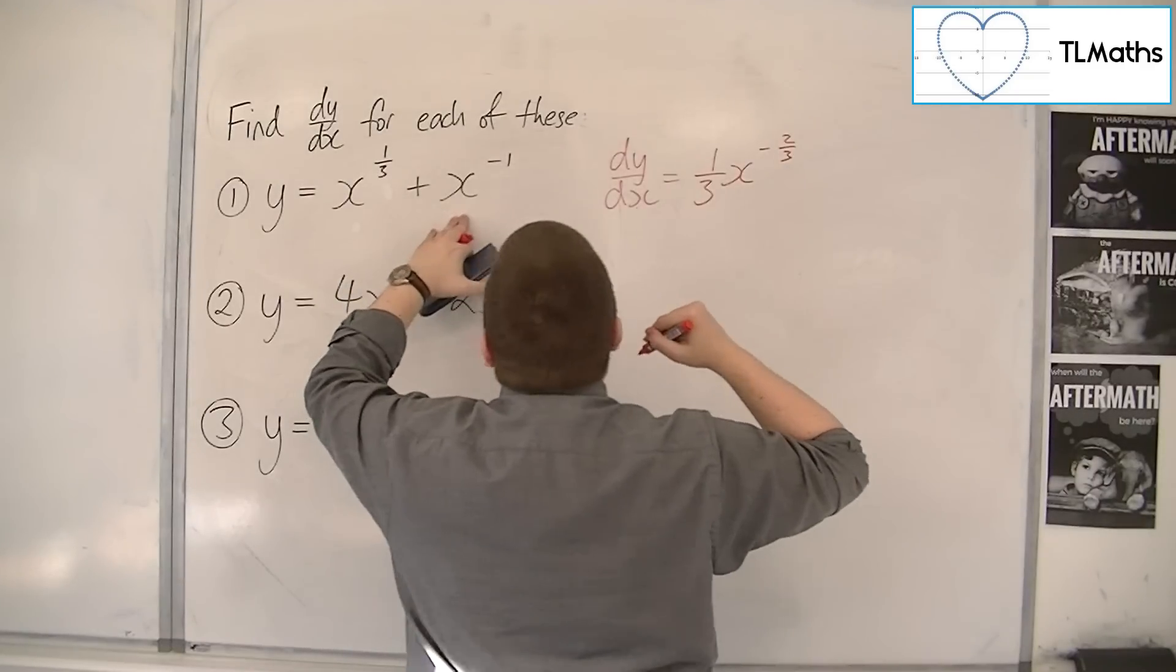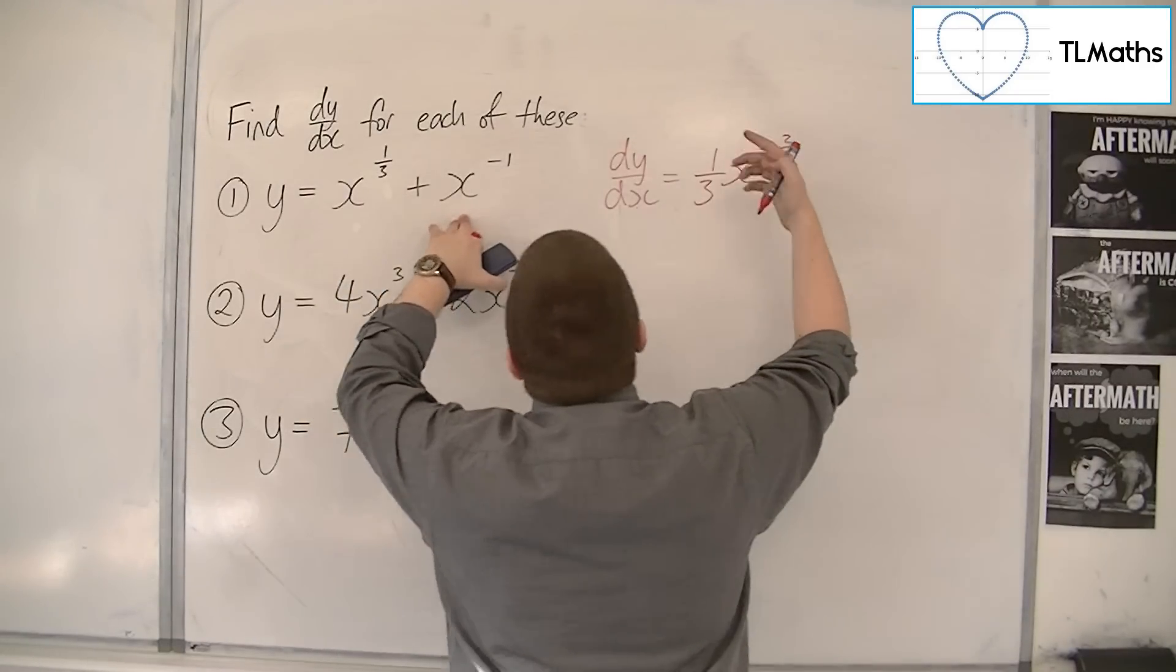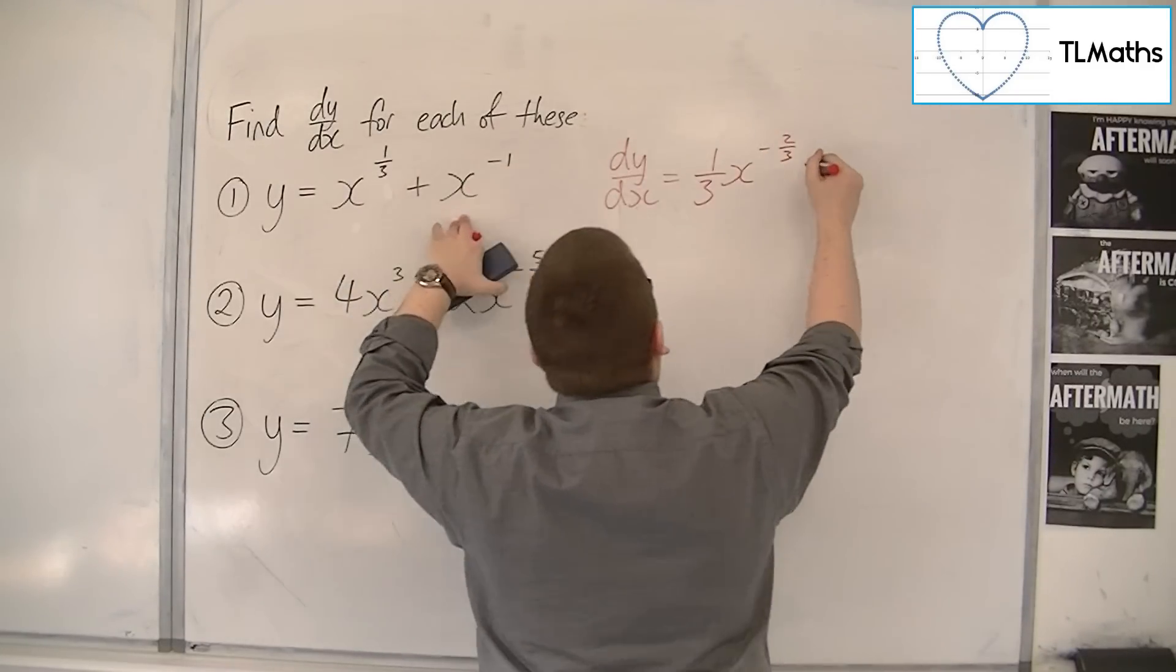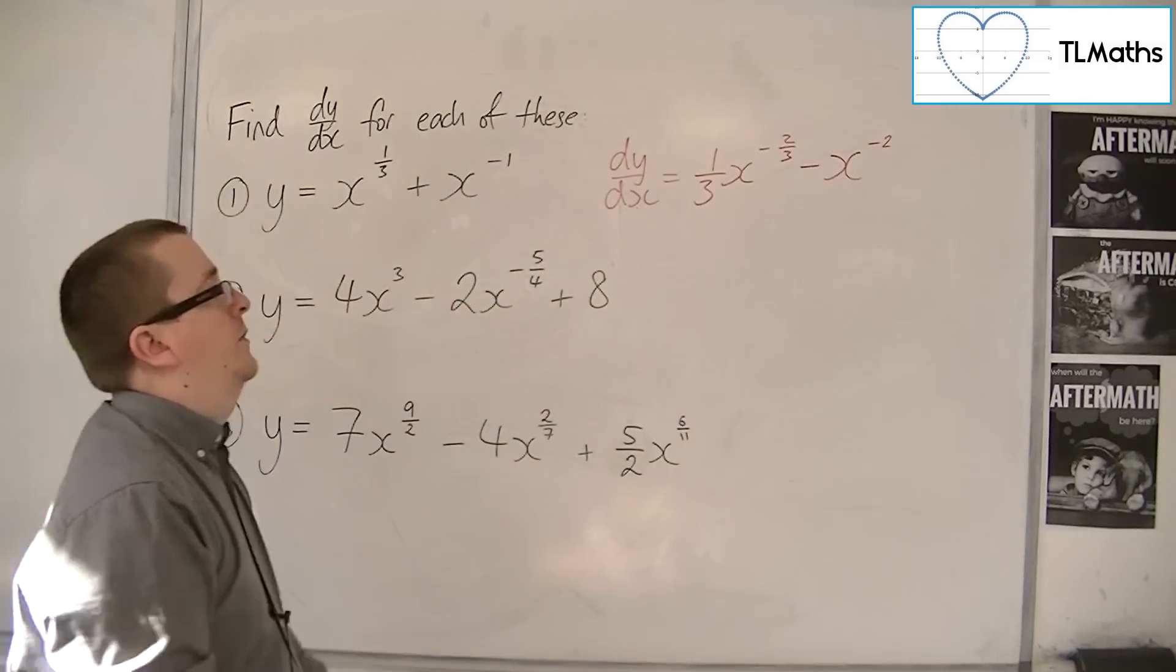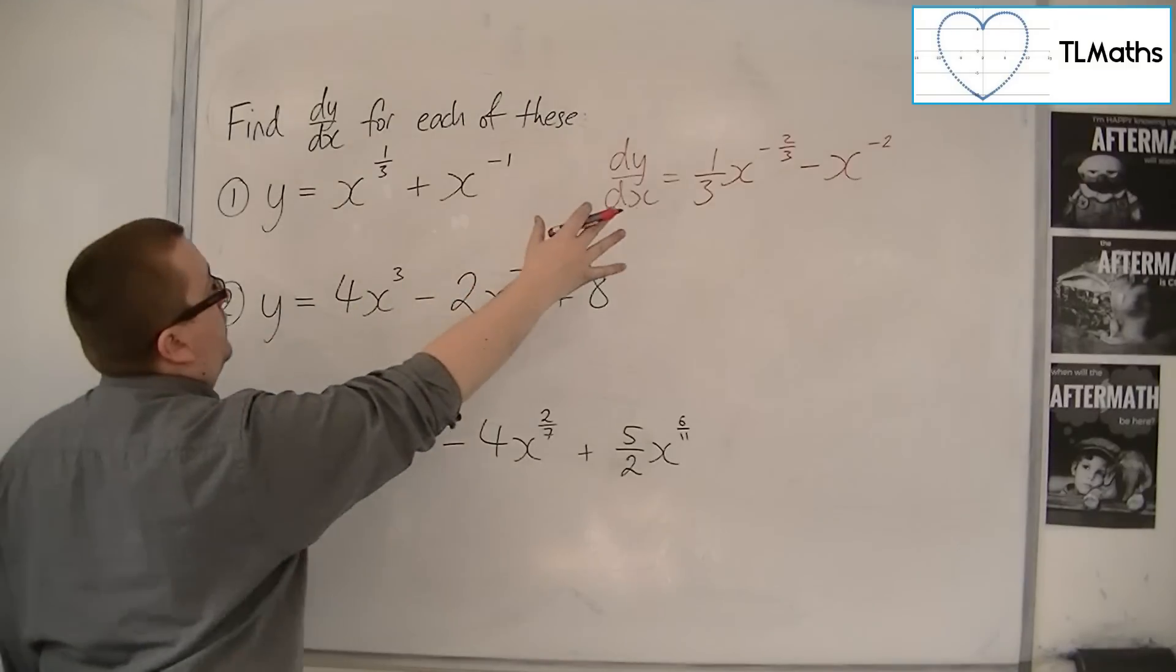Then we've got plus x to the minus one. So the minus one comes down to the front, and then we take one off the power. Okay, so that would be the first derivative.